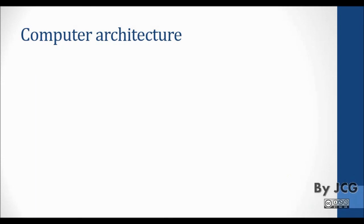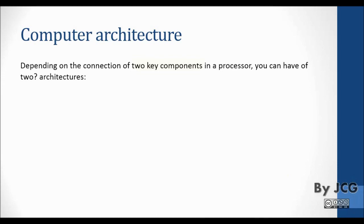Computer architecture depends on the connection of two key components in a processor, and those two key components are instruction and data. Data is basically where you store information such as variables, current data, or read values from a sensor, for instance. The instruction code is what to do with that information — it is what the processor is going to do.